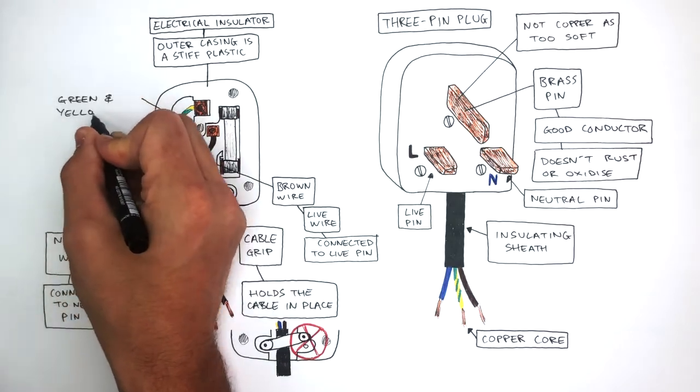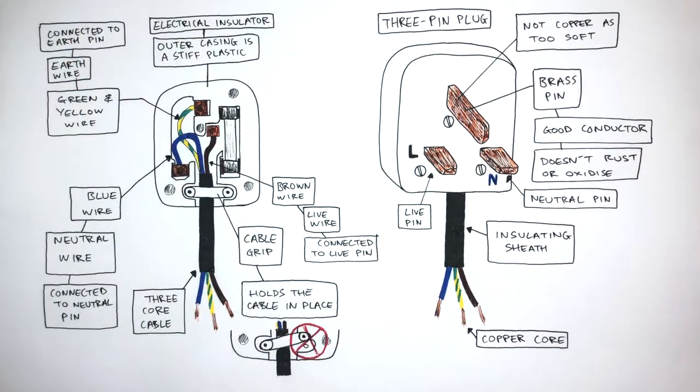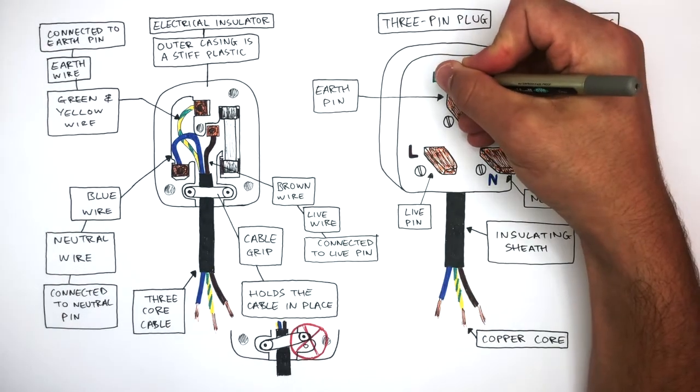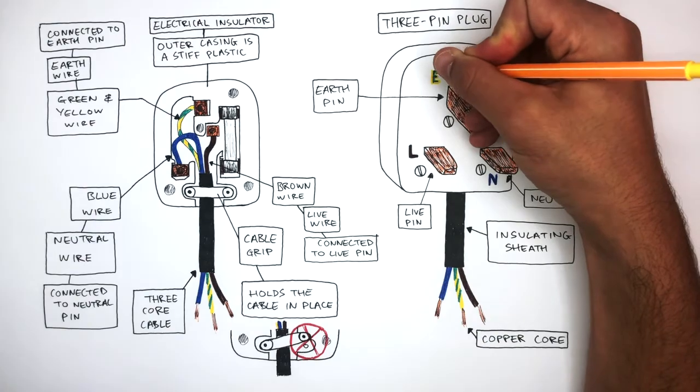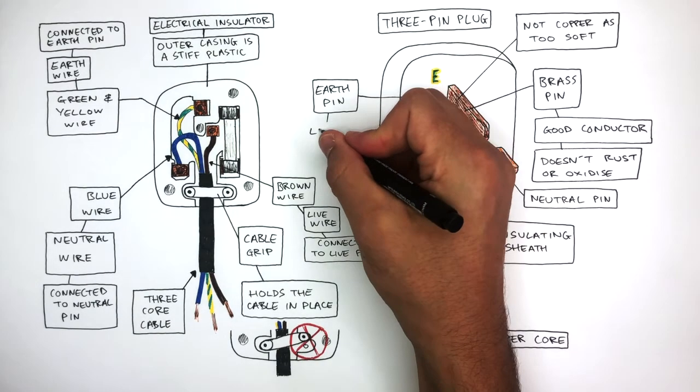And the green and yellow wire, which is the earth wire, is connected to the earth pin. This is the earth pin. So I'm writing a capital E in green and yellow to represent the earth pin. The earth pin is the longest pin.